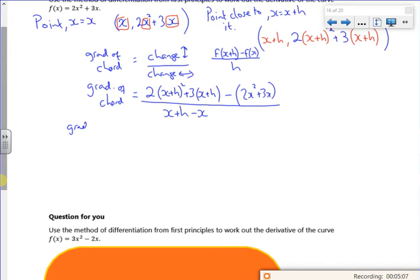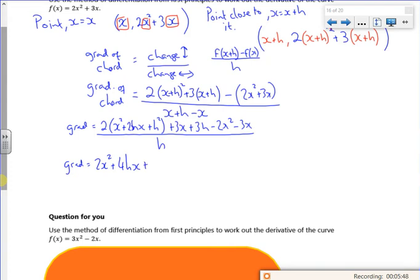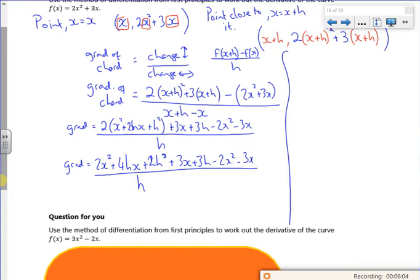So the gradient of my chord, if I expand the brackets, it's 2 lots of x squared plus 2hx plus 4hx, plus h squared plus 3x plus 3h minus 2x squared minus 3x all over h. So my gradient of my chord, if I expand that bracket, is 2x squared plus 4hx plus 2h squared plus 3x plus 3h minus 2x squared minus 3x all over h. How messy does that look?